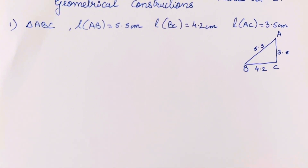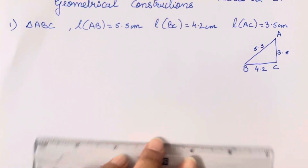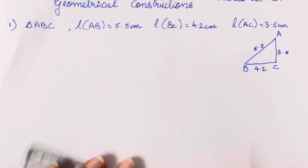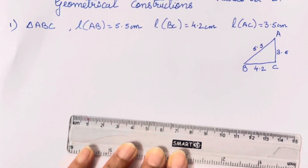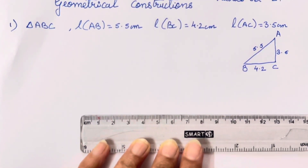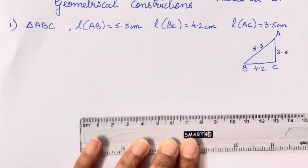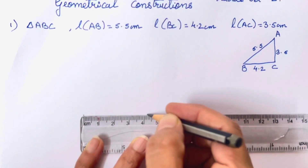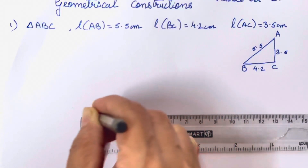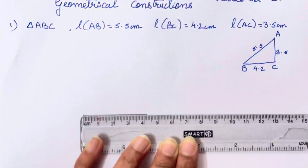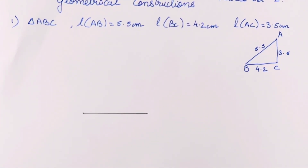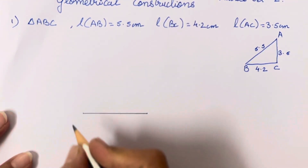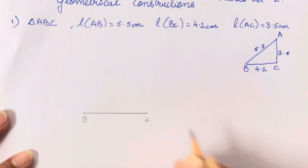First, we have to construct the base, which is very easy using a scale. Measure 4.2 cm. In this way you will have to first construct BC. This is B and C.